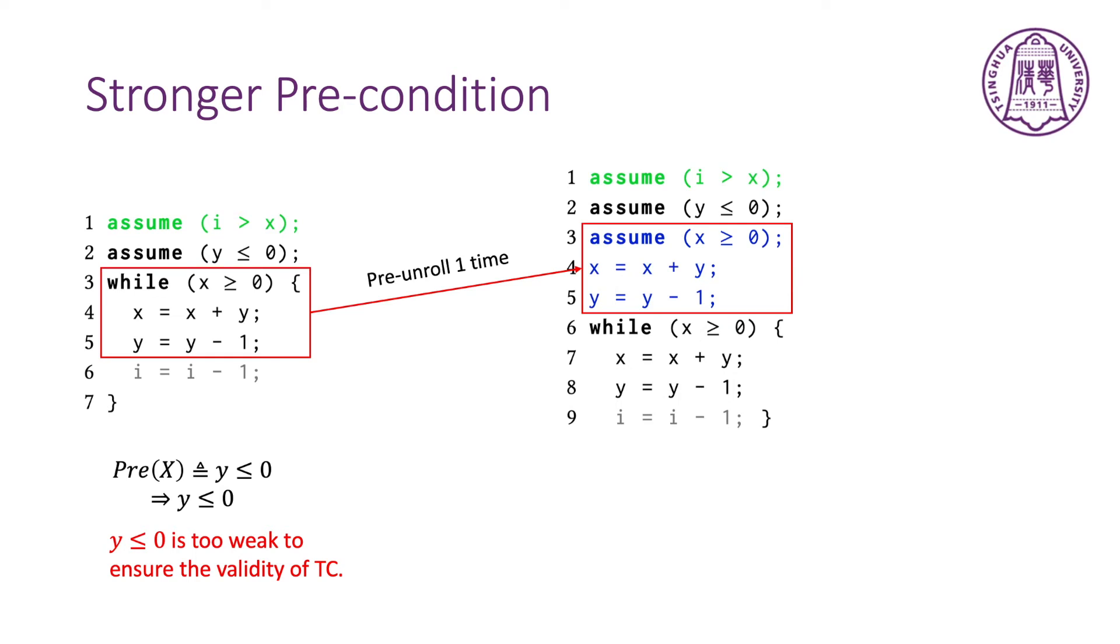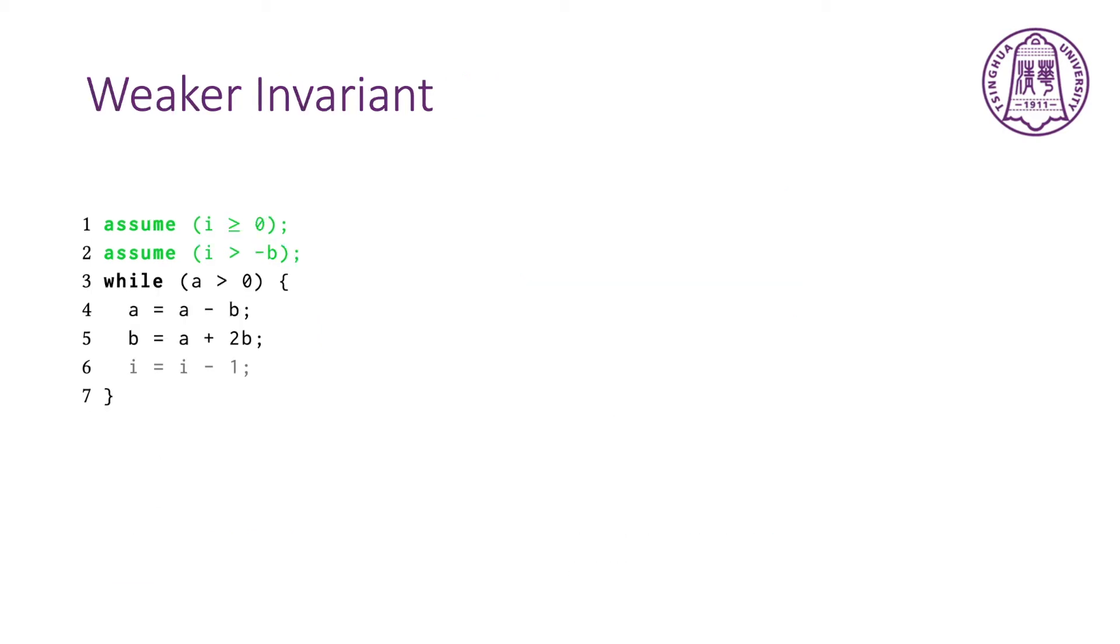But if we unroll the loop one time in front of the loop, the precondition is strengthened. This implies the invariant, y is less than 0, which is strong enough to ensure the validity of the TC.